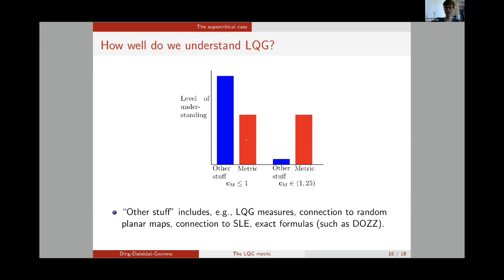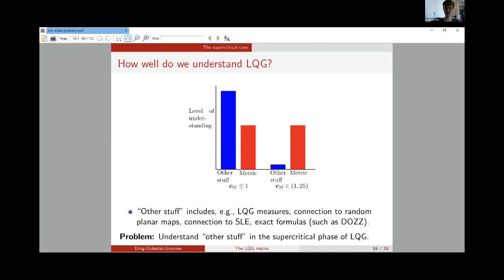We have an intermediate level of understanding of the metric in the subcritical case: we can construct it and prove various properties, but there are lots of fundamental questions we still don't understand, such as the Hausdorff dimension or the convergence of non-uniform planar maps in the Gromov-Hausdorff sense. In the supercritical case, we understand the metric about as well as we do in the subcritical case: we can construct it and prove the same sorts of things. However, we don't really know much about any features of LQG in the supercritical phase besides the metric itself. The next open problem is to understand the non-metric features of LQG in the supercritical phase.